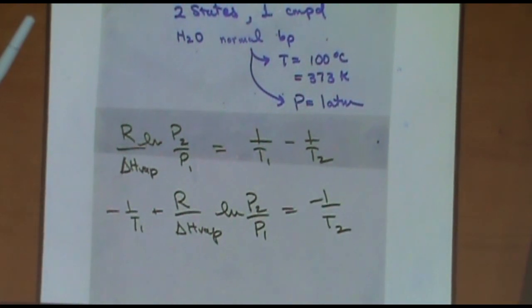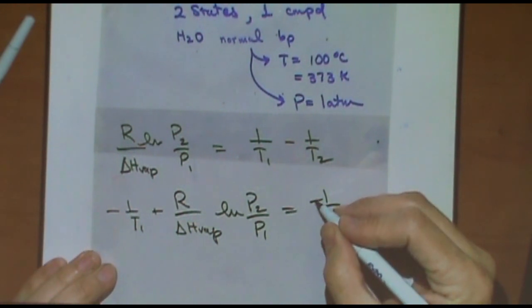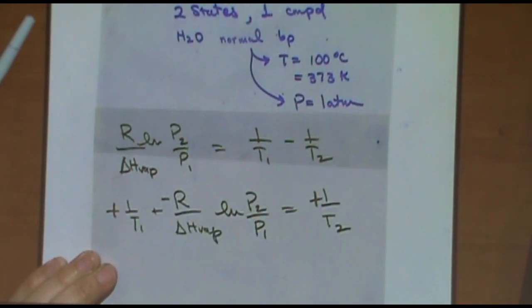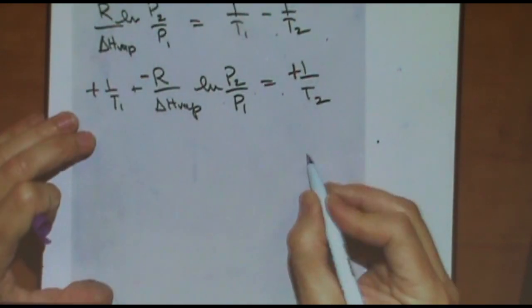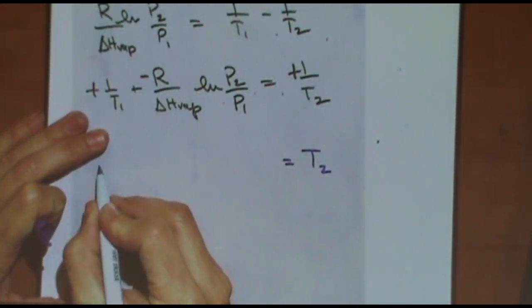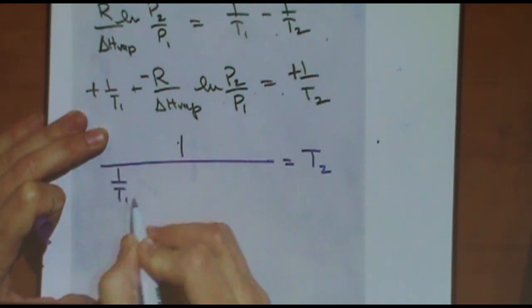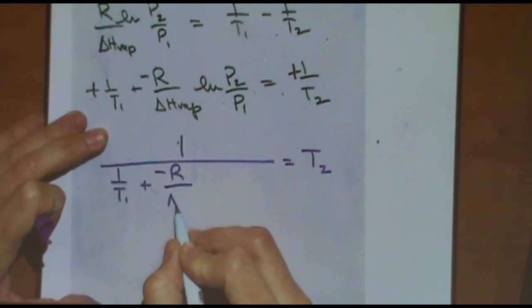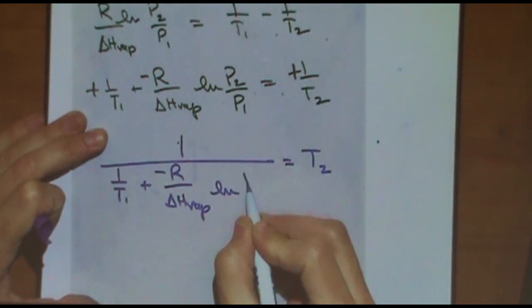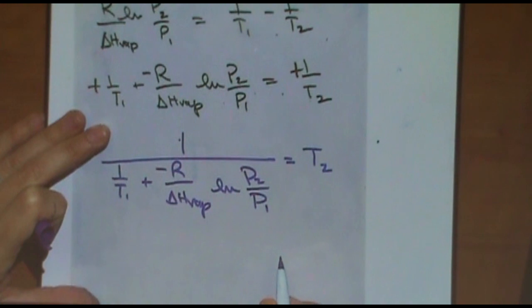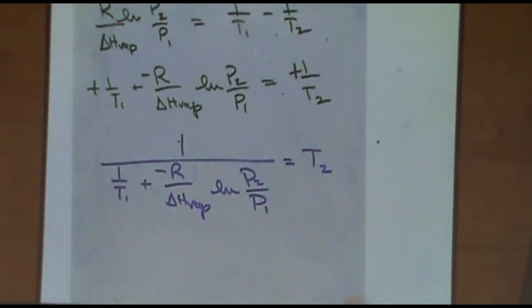So I'd go, okay, I've got minus 1 over T1 plus R over delta H of vaporization natural log of P2 over P1 equals minus 1 over T2. So far okay? And then I would flip the signs. I'm going to get a different color. Multiply through by minus 1, like that, because I want to solve for T2 and I want it to be positive over there. And then I would take the inverse of each side. So finally, T2 equals 1 over 1 over T1 plus negative R over delta H of vaporization natural log of P2 over P1. So you should be able to solve for any variable in this equation.